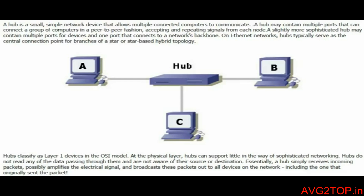A hub is a small, simple networking device that allows multiple computers to communicate at the same time. In the hub, there are multiple ports where multiple computers can be connected in a group, which connects like a peer-to-peer connection, that is a one-to-one connection, accepting and repeating the signal. When the signal is weak or not sent to the right destination, it tries to repeat the signal until it sends the data from source to destination.